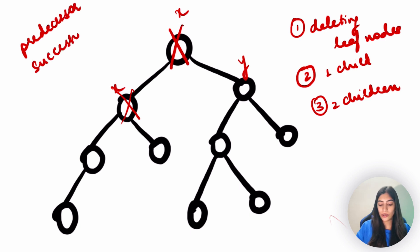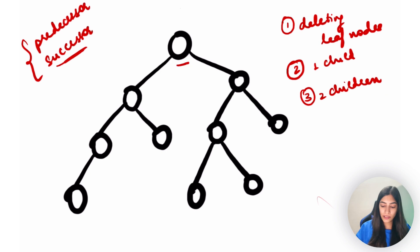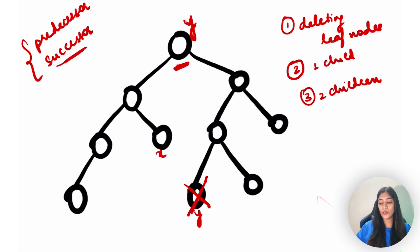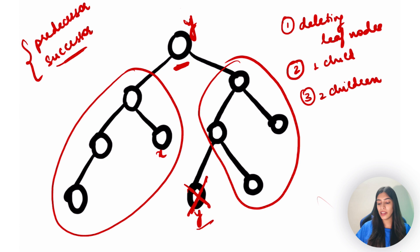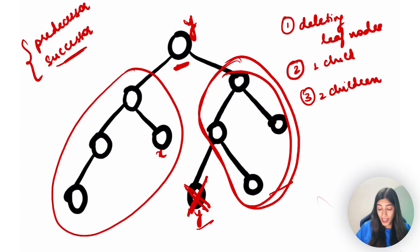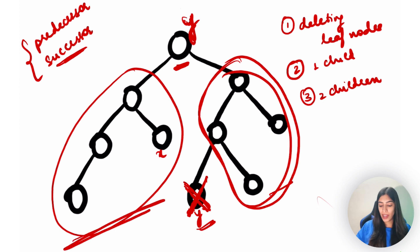Instead, what I do is either find the in-order predecessor or the in-order successor. Let's take the in-order successor case. Suppose this is x and the successor is y. I am assigning y to x's position and then deleting the successor node. This does not affect the rest of the tree because all the values below y are still greater than y. It's easy to delete the leaf node, so I use that approach here.